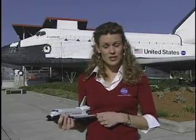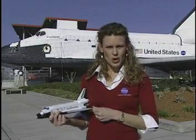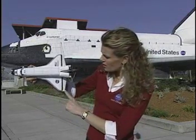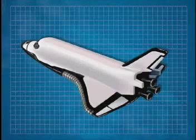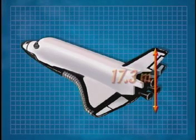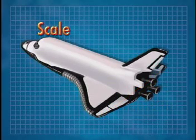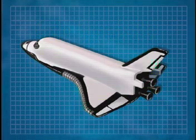Do you think you can handle the other two dimensions? Now it's your turn to calculate the height and the width or wingspan of the shuttle model using the given scale. Remember, the height of the actual shuttle is 17.3 meters, the width or wingspan is 23.8 meters, and the scale is 1 meter equals 100 meters. It's now time to pause the program to calculate the height and width of the shuttle model.